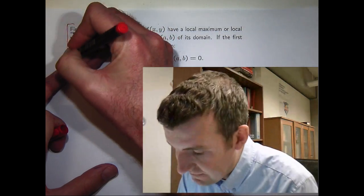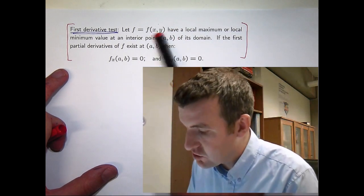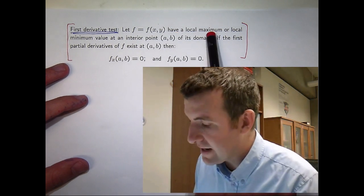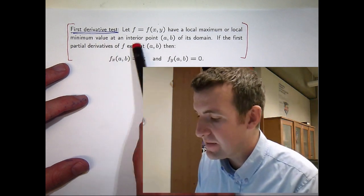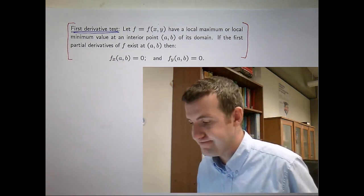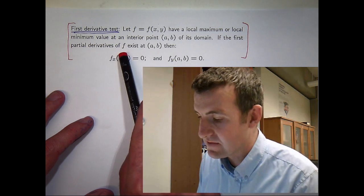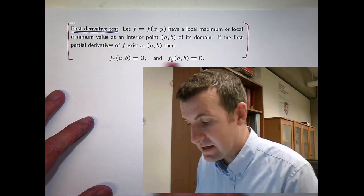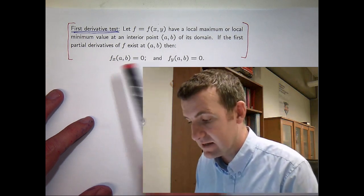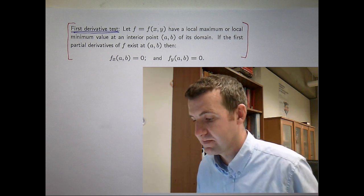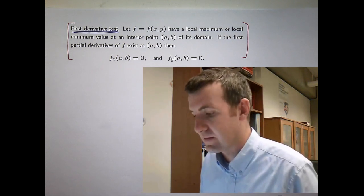So suppose I've got a function of two variables and it has either a local maximum or a local minimum value at some interior point of its domain. If the first derivatives of f exist at that point then the partial derivatives at the point (a, b) are both equal to zero. Now let's deconstruct that a little bit more.